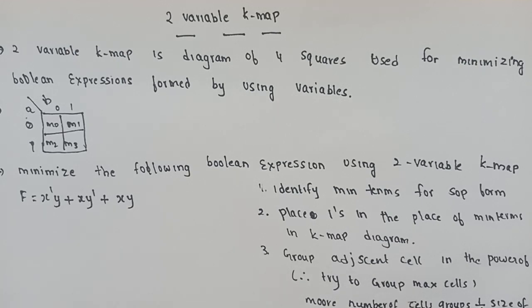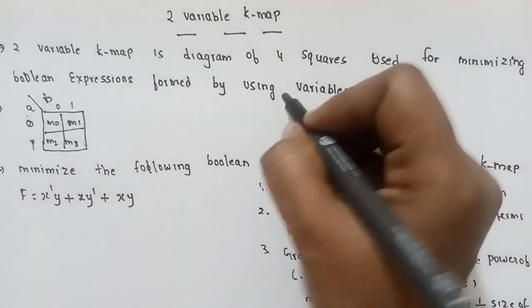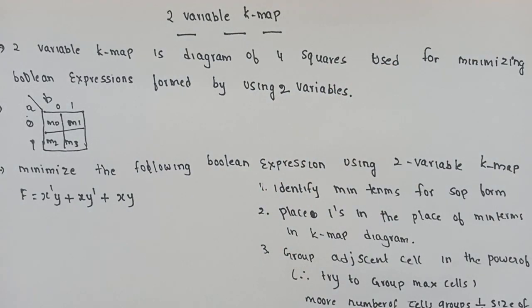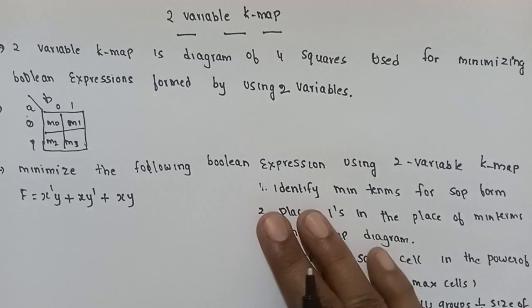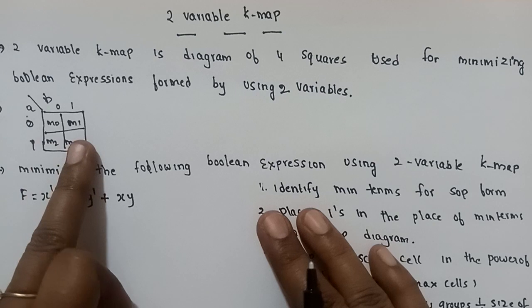Two variable K-map is a diagram of four squares used for minimizing Boolean expressions using two variables. Two variables are used to form Boolean expressions. The use of K-map is a diagram of four squares.